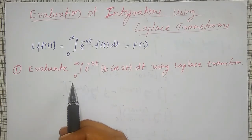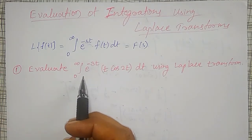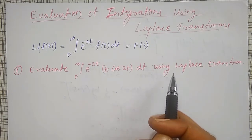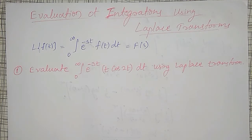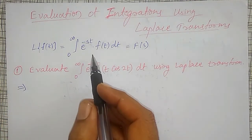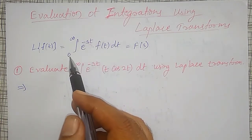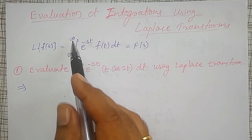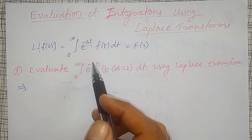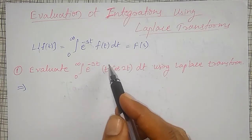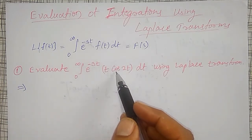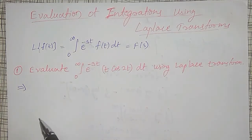The first example: evaluate the integration from 0 to infinity of e^(-3t) · t·cos(2t) dt using Laplace transforms. Comparing with the Laplace transform definition, the right-hand side has integration from 0 to infinity of e^(-st). Comparing e^(-3t) with e^(-st), this is my f(t), which is t·cos(2t), and s is equal to 3 here.